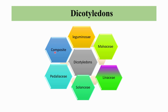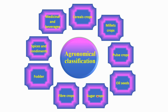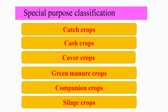The Compositae family includes sunflower and safflower — these are the families under Dicotyledons. Field crops can also be classified according to economical purpose: cereal crops, millet crops, pulse crops, oil crops, sugar crops, fiber crops, powder crops, spices and condiments, and medicinal and beverage crops all come under economical classification.